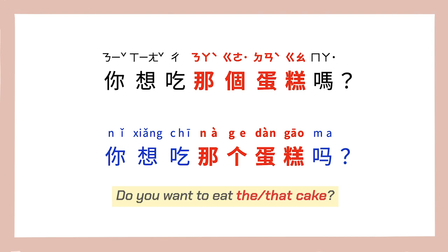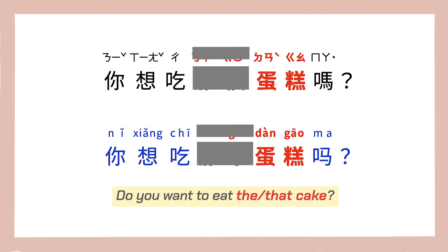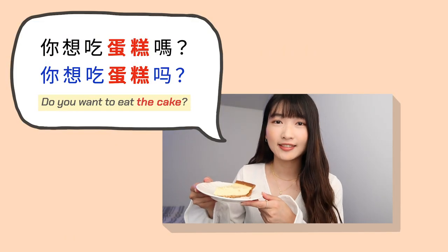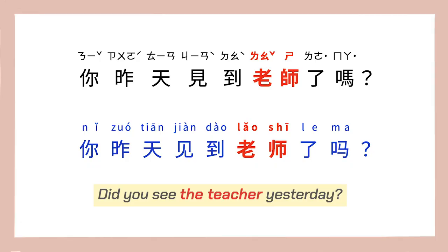Sometimes, if the context is clear enough, you can even drop the demonstratives and just use the noun itself, like 你想吃蛋糕吗? Another example: 你昨天见到老师了吗? — Did you see the teacher yesterday?